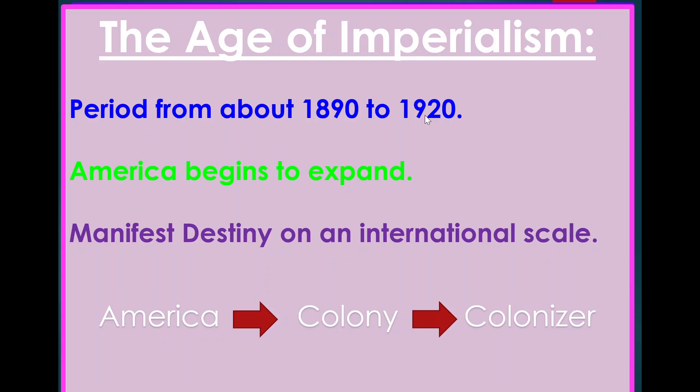This is the period in American history where America begins to expand. What we're talking about here is manifest destiny on an international scale. We see America first become a colony, and then America becomes a colonizer.